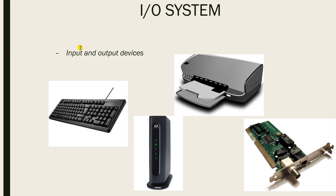The I/O system refers to your input and output devices — pieces of hardware used to communicate with a computer. This can be a keyboard used as an input device, a printer used as an output device, or devices that are both input and output, like a modem. Modem stands for modulator-demodulator.